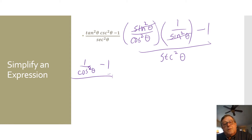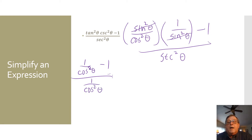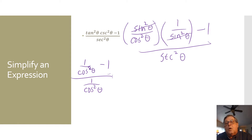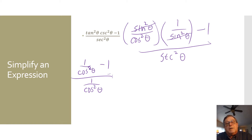Now I'm going to deal with this secant squared of theta, because it is 1 over the cosine squared of theta — that's the reciprocal identity. So using the reciprocal identity on cosecant squared of theta made it 1 over sine squared of theta. Now the expression is 1 over cosine squared of theta minus 1, divided by 1 over cosine squared of theta.